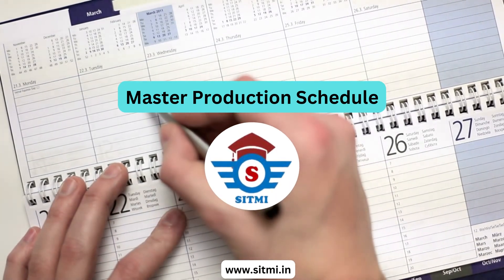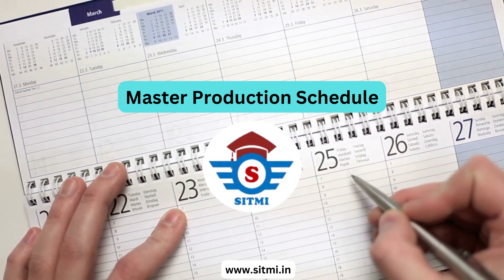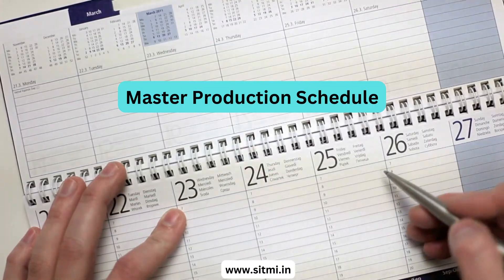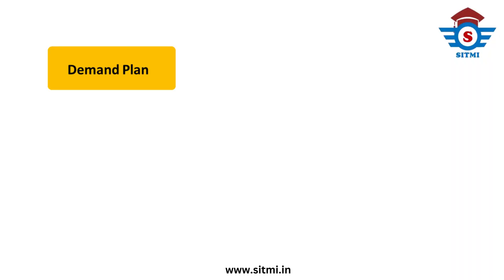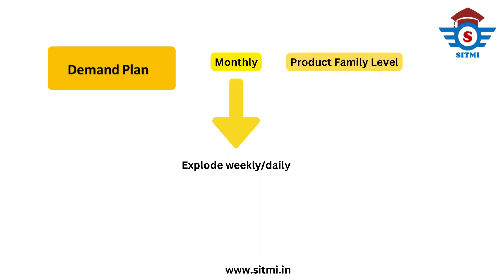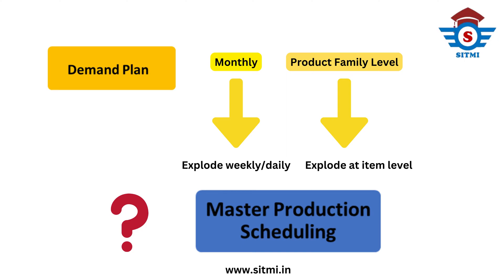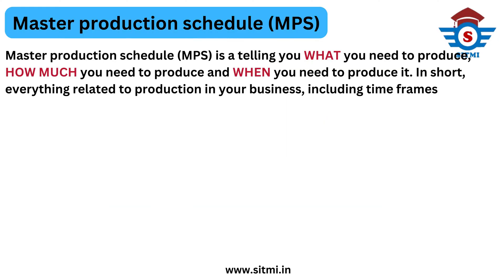Now we will talk about Master Production Schedule. We all know that the demand plan coming out from the S&OP demand planning process is in a monthly bucket, but to explore that plan it is important to have some systems. Also, demand planning is usually done at product family level, but it is also important to explore that plan at individual item level. The systematic way to do this is a Master Production Schedule.